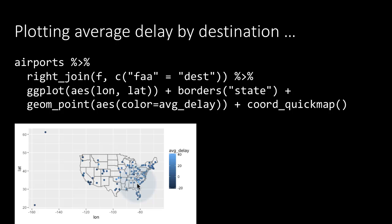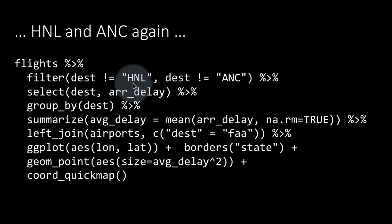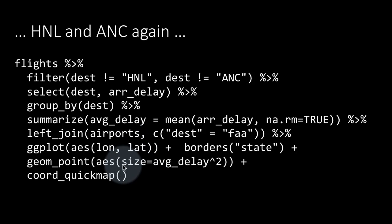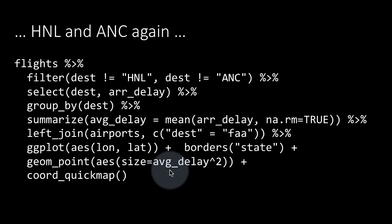What we might want to do is add yet another visual cue to indicate the amount of delay more dramatically. At the same time, we also want to get rid of Anchorage and Honolulu. So we filter: destination not equal to Honolulu, destination not equal to Anchorage, then select arrival delay, group by destination, and summarize as before. We join to the airports again — this could have been an inner join. This time we let the size of the points also be proportional to the delay — specifically, proportional to the square of the average delay, just to dramatize the differences.